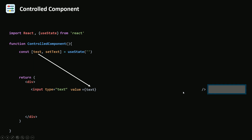Now if I go and type something inside my input box, nothing's going to happen — it's not going to change. Because the value of this input is always going to be the value of the text variable. The only way to change it is through setText. So when I type, I'm not using setText to change the text at all. That's what you need to understand when you create a controlled component.